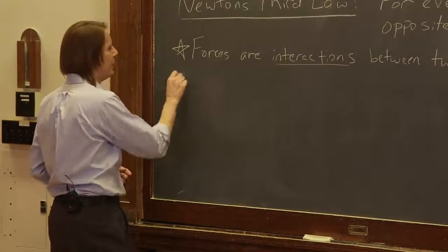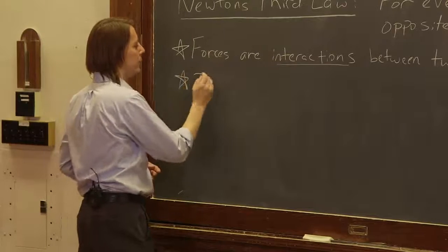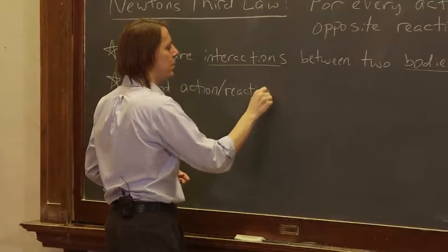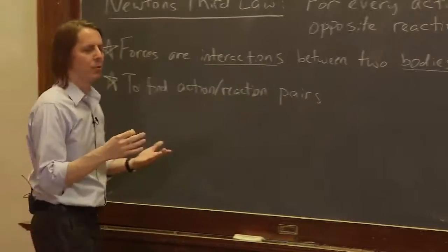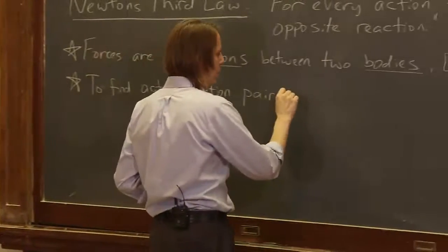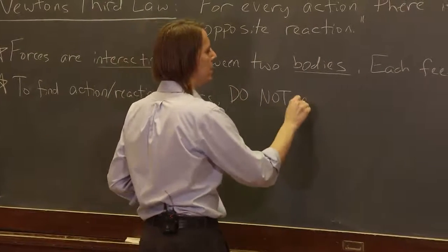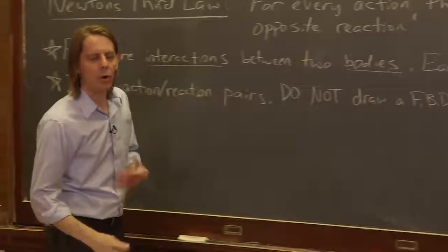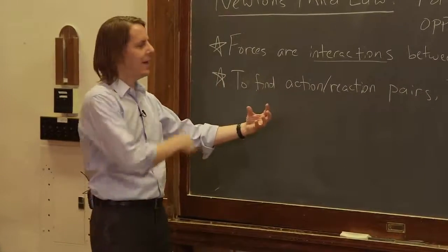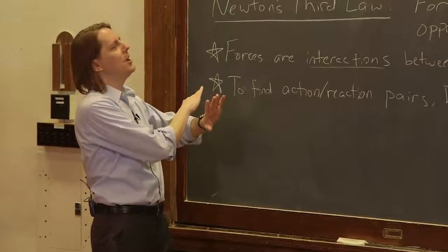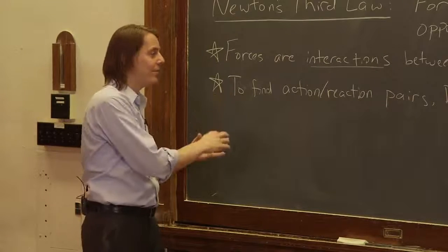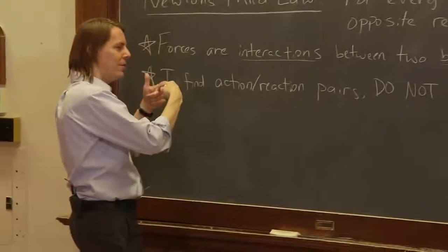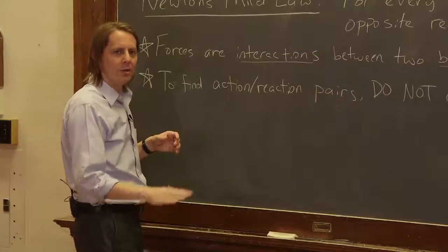Here's some advice to find action-reaction pairs - and that's the phrase we use for the pair of forces: do not draw a free-body diagram. The whole point of a free-body diagram is to consider a single body and add up all the forces on it. That's the opposite of action-reaction pairs. Action-reaction pairs are a single force acting on two bodies, not all forces on one body. It's one interaction force on two bodies.